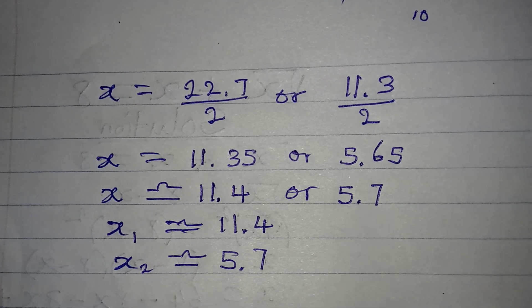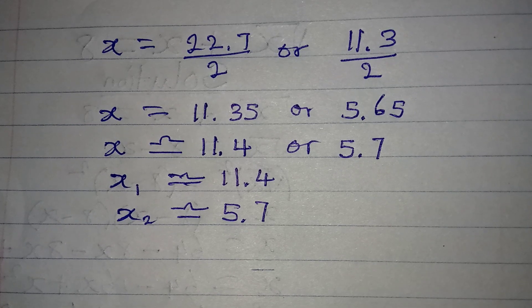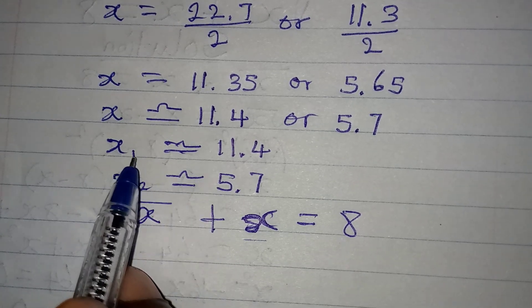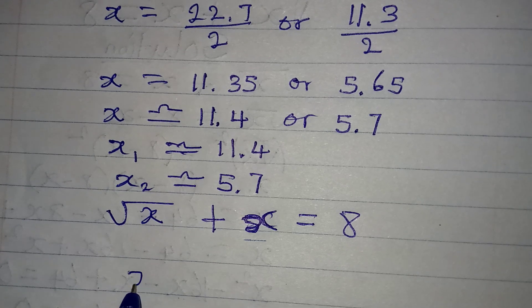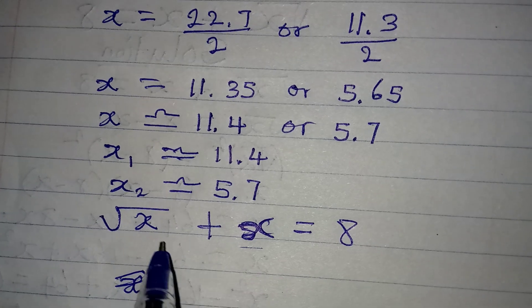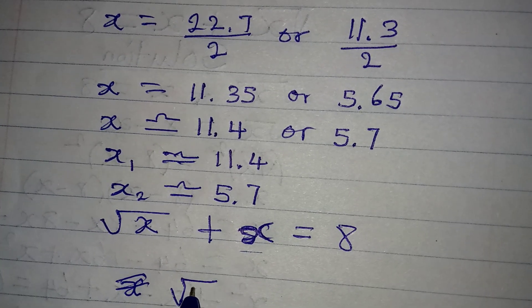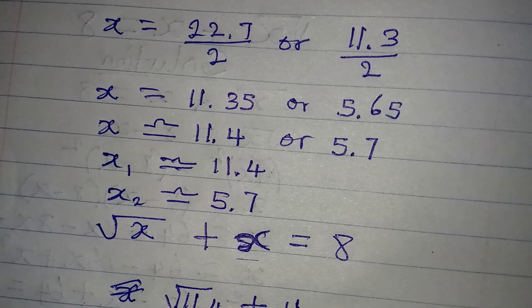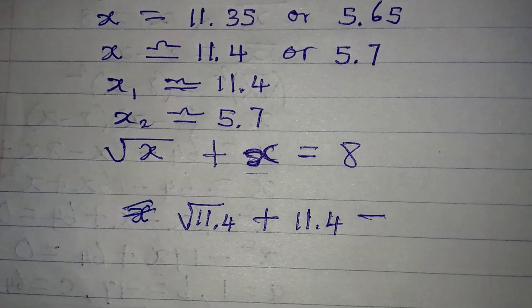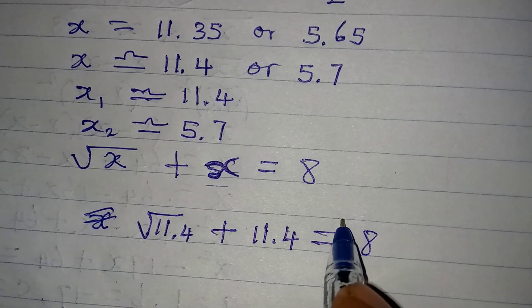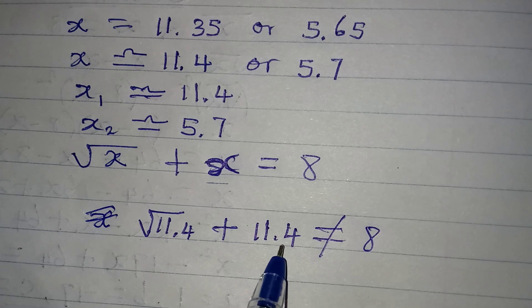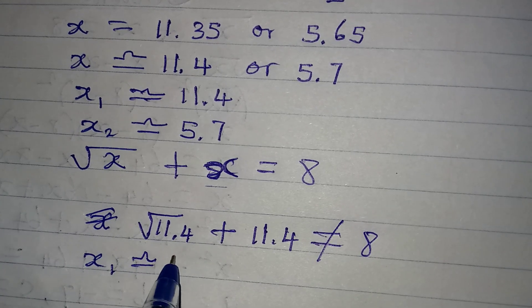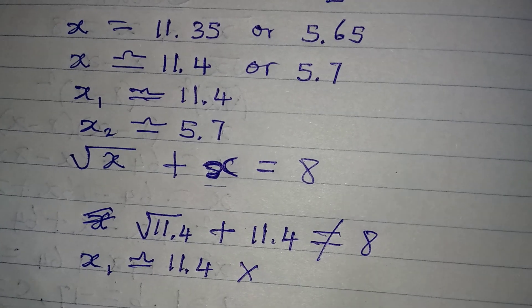Now let's check to know which of them will best satisfy the given equation. So this is the original equation. So from here, let me put in the value of x1. x1 over there will now be square root of 11.4, then plus we have x here too, that means we have another 11.4. This can never be equal to 8, because 11.4 is already more than 8. So meaning that the first solution, which is x1, approximately equal to 11.4 does not satisfy the given equation.